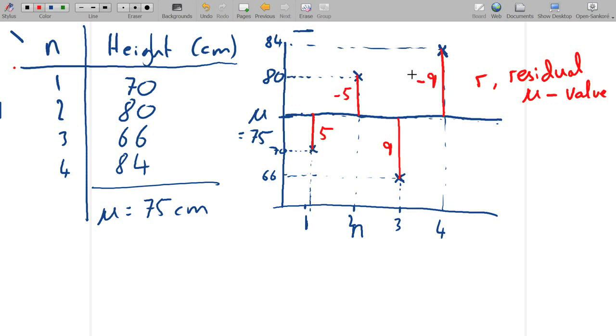And now unfortunately because we've got negative numbers in here, we want to get rid of that sign, and the way that we do that is by squaring each of the residuals. If we square each of these residuals, we have 5 squared is equal to 25, minus 5 squared is equal to 25, 9 squared is equal to 81, and minus 9 squared is equal to 81.